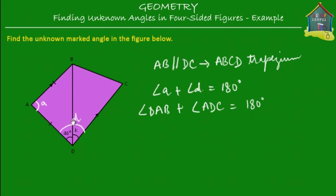So if we can find out what angle D is, we can find angle K, which is BDC. We can find out what K is equal to if we know what D is equal to. And how do we know what D is? Well, if we can find out what A is equal to, then we can find out what D is equal to. So let's see what other information is given to us.